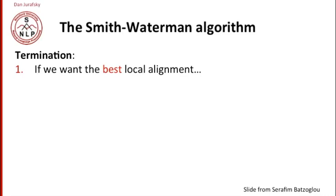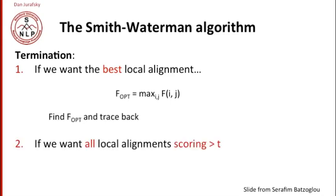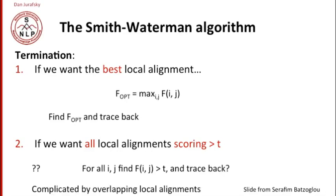The termination condition of the Smith-Waterman algorithm depends on what we're looking for. If we just want the best local alignment, we'll pick the place that's maximum in the entire array, and we'll trace back from there. If we want all the local alignments that score greater than some threshold T, then maybe we'll find some place that's greater than T, find all those places and trace back all of them. Now this gets complicated by the fact that there can be overlapping local alignments. So we might have two alignments like this, and it might be that they actually overlap tracing back. So there can be some complications here. But if you want the best local alignment, that's actually much easier.